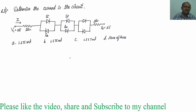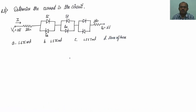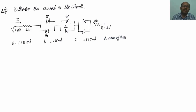Let us discuss the third question. To solve it, you should be familiar with KCL, KVL, nodal analysis, and most importantly Ohm's law: V = IR. We have to find the current flowing from left to right, which I will call I.